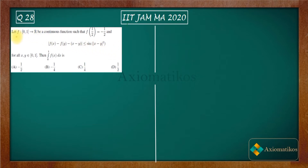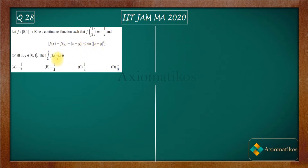We have f, a continuous function from [0,1] to ℝ, such that f(1/2) = -1/2, and f satisfies a given property. The question is asking us about the integral of f(x). We are not given the function f(x) explicitly, so it becomes difficult to find it directly. By using this condition only, we have to find f(x), because otherwise there is no way to find the integral without knowing the integrand.